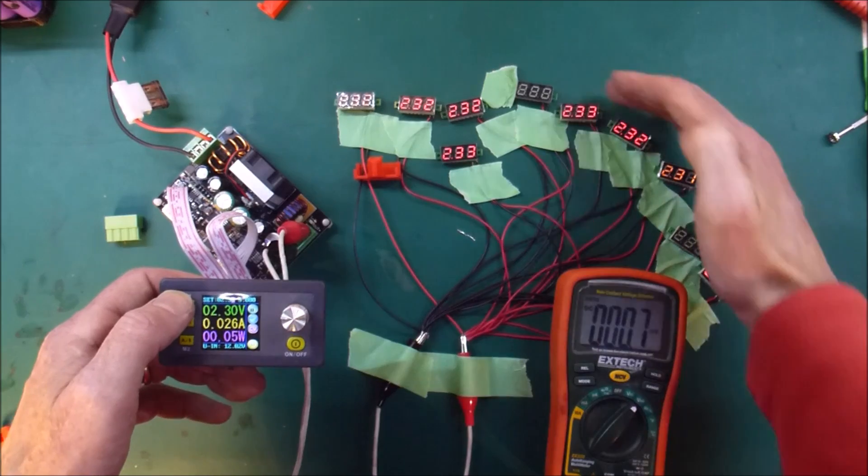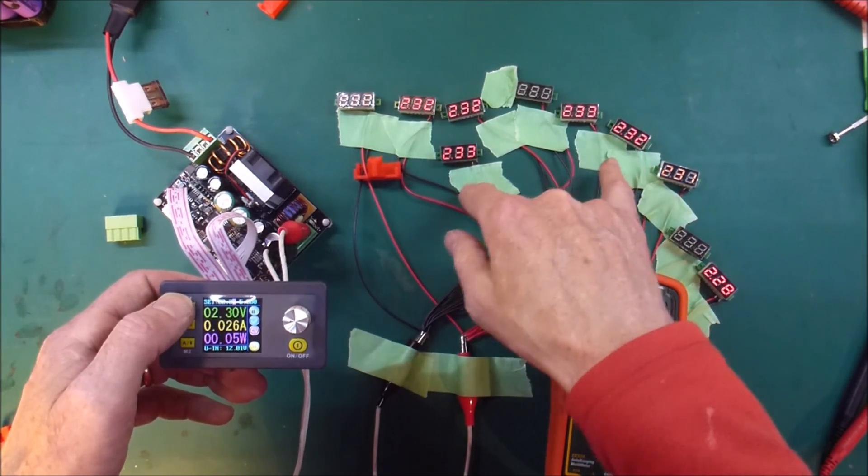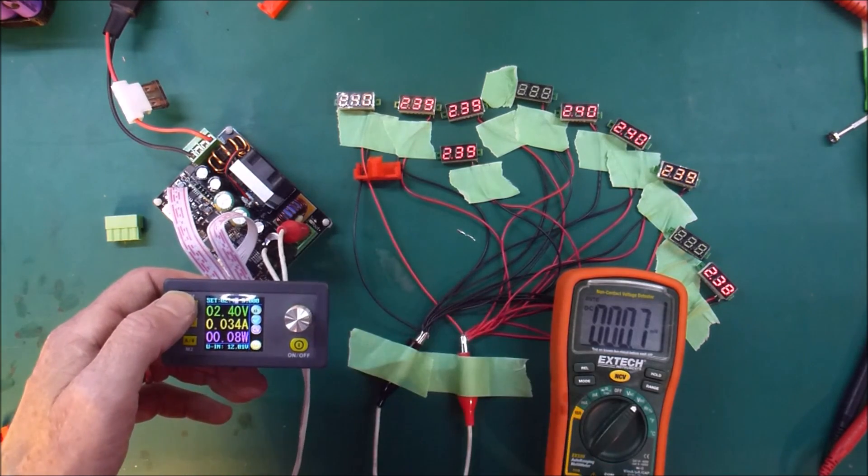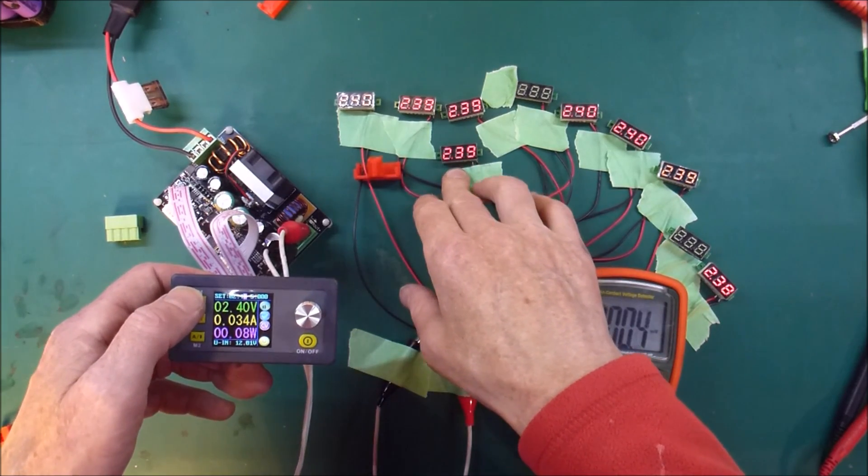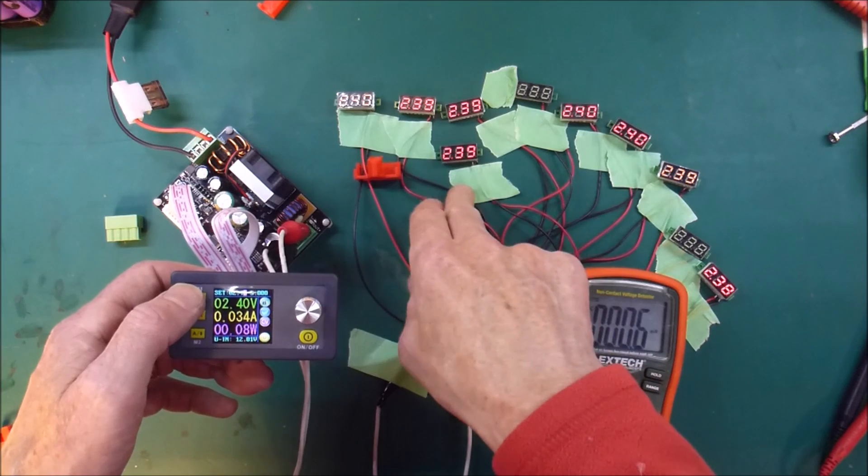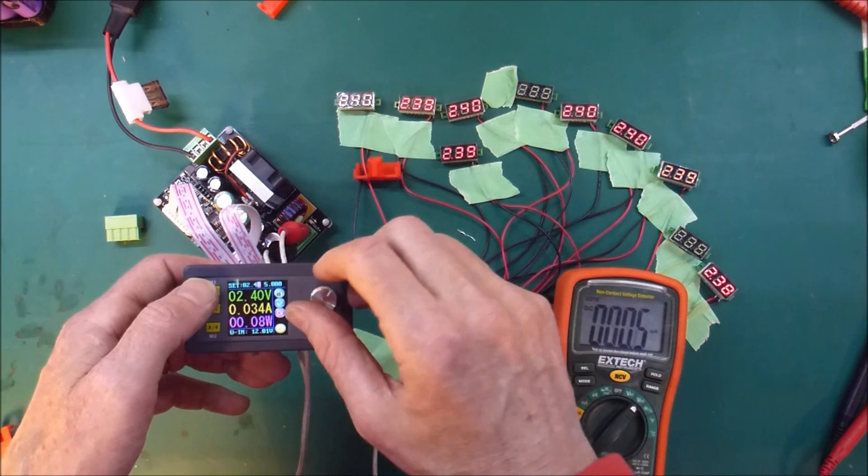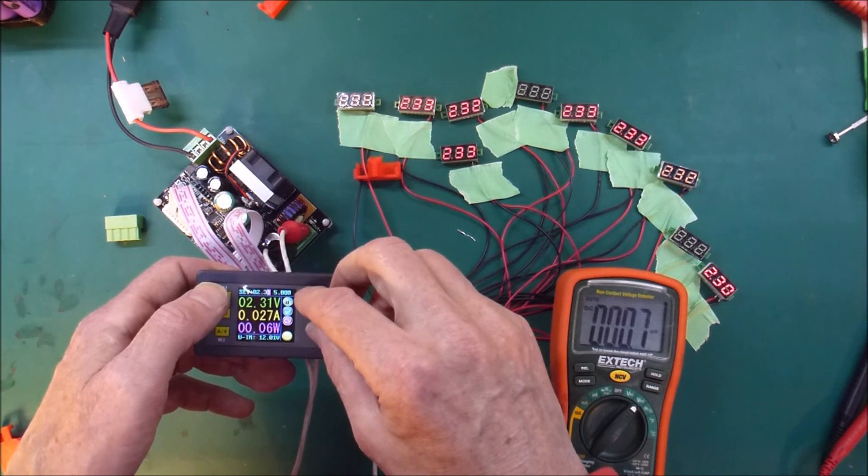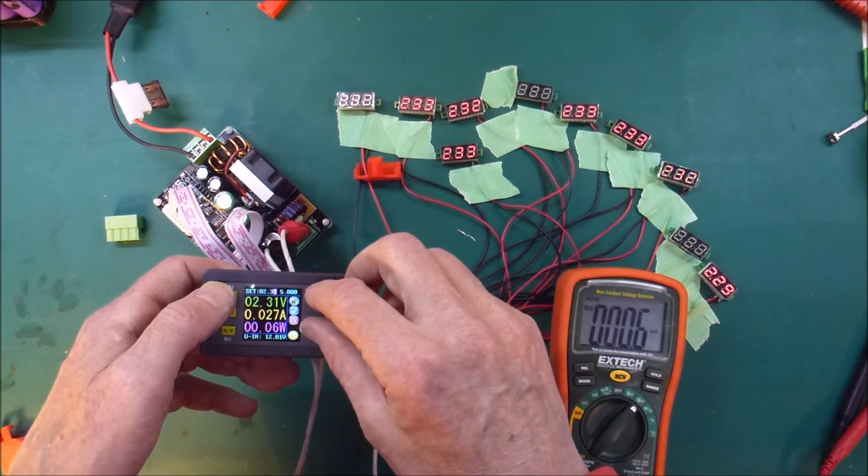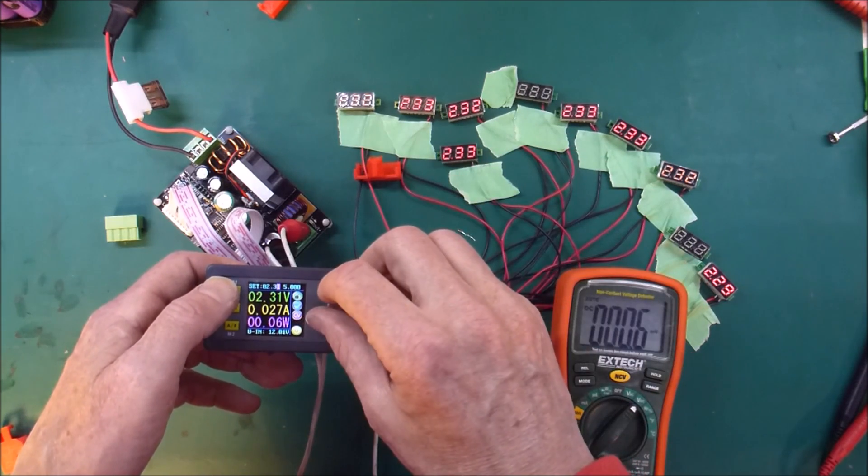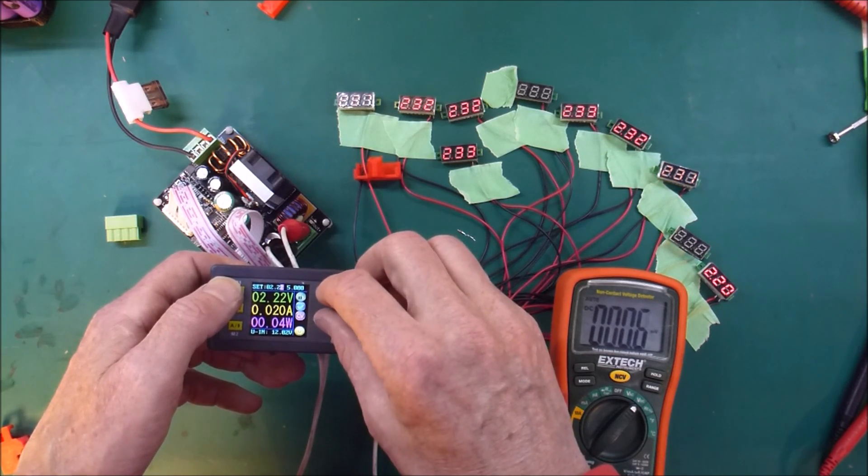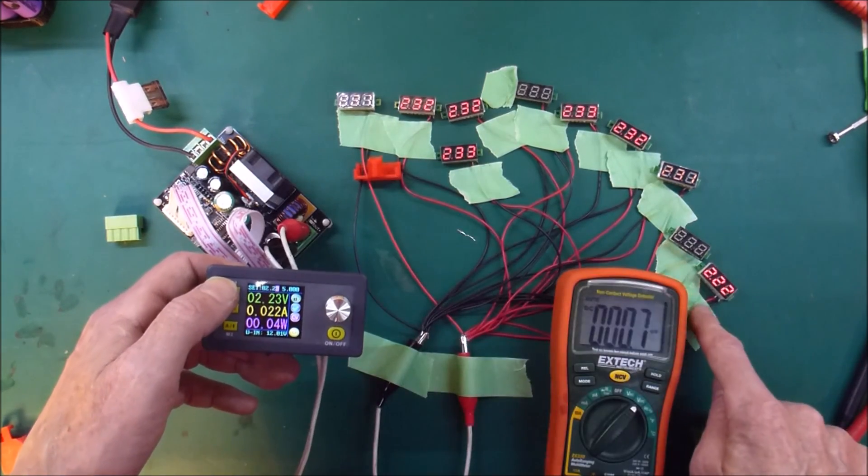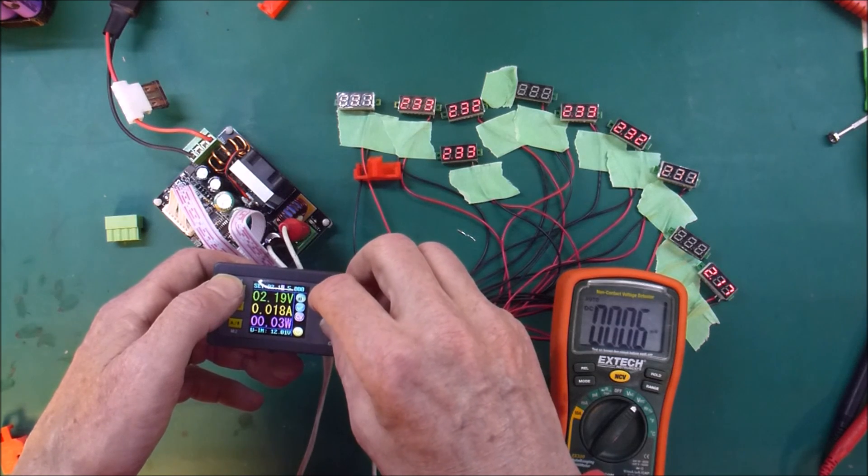So I think the moral of that story is you can trust them down to about 2.4. And they'll go down to 2.3, but then 2.33 is where they seem to lose the plot. They're still lit, but they're not measuring. Except for this one here. So I need to know how far this can go, because that is still... 2.